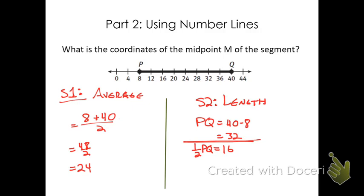So, this distance is 32 units. Well, if it's 32 units, then half of PQ would be 16. And so, I could start at P and add 16 units, or I could start at Q and subtract 16 units. Either way would get us to 24. So, there's just a different way of thinking about it. You could just take the average to find the midpoint, or you could find the length of the segment and add half of that length to the first point, or subtract half that length from the second point. Either way, no matter how you do it, you should end up at that midpoint.